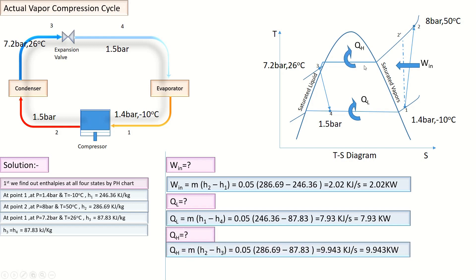How much heat is rejected by the condenser to the environment? Similarly, by the difference of enthalpies and mass flow rate, we get Q_c = 9.943 kilowatts.